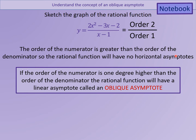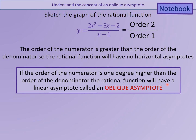If the order on the numerator is one degree higher than the order on the denominator, then the rational function has a linear asymptote called an oblique asymptote. So it still has an asymptote — it's just not horizontal or vertical. It is oblique. Get down what you need in your notebook — you want to pause there.